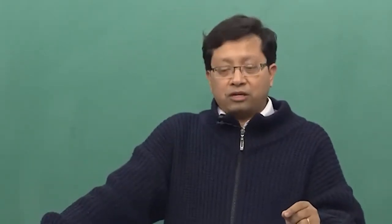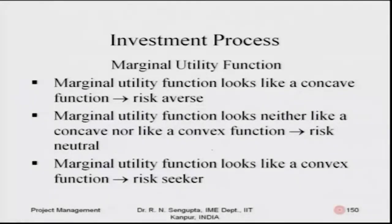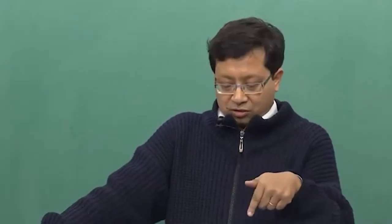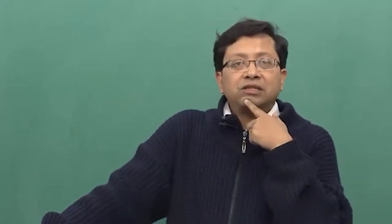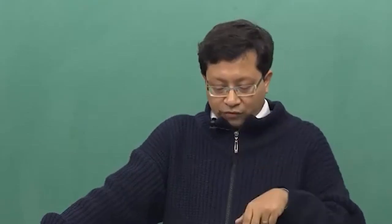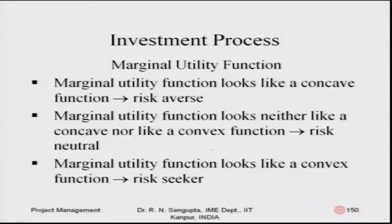The marginal utility function means the first derivative. If the marginal utility function looks like a concave function, it is a risk aversion property — corresponding to the green curve. If it looks like a convex function, the person is a risk-seeker — the red curve. If the marginal utility function is neither concave nor convex (a straight line), the person is risk-neutral — the blue curve.